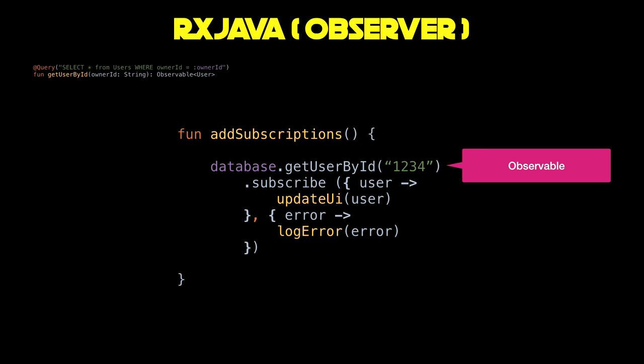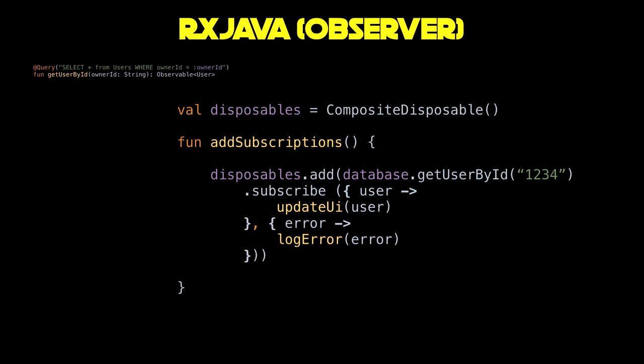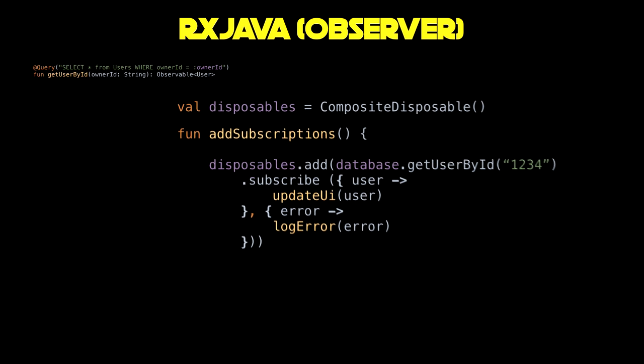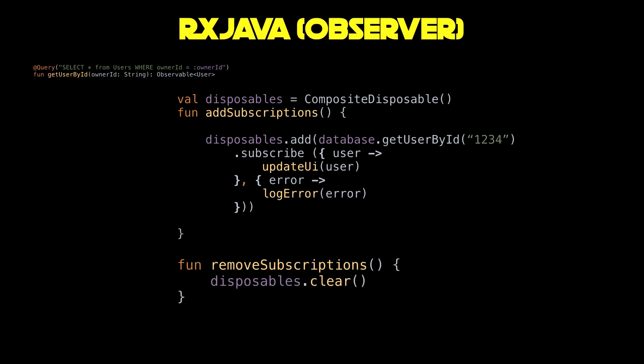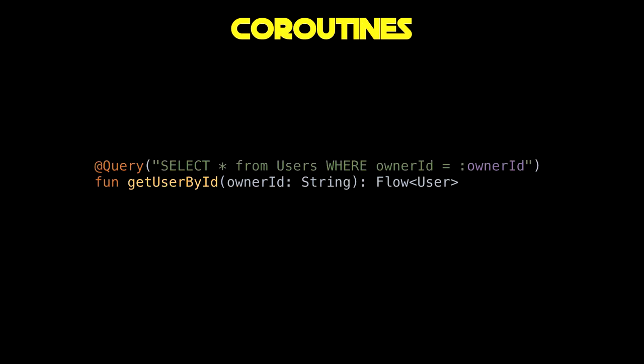If anything goes wrong we can log an error, though in my experience the Room database has never thrown an error in this way. There is still one thing missing though — this will observe forever. You will get a memory leak because this thing will just keep observing as much as it can, and you might even get a transaction error from the database. So what we need to do is create a CompositeDisposable at the top, which is a list of all the subscriptions that you can add to it. Then at the end we can just clear it with disposables.clear — this removes all of those subscriptions so nothing is being observed anymore, and also notifies the Room database that nothing is watching anymore so it can clean up its own observables and listeners.